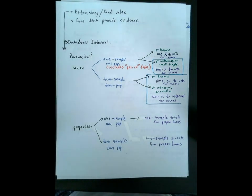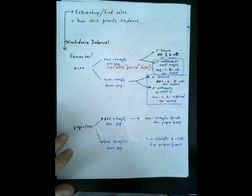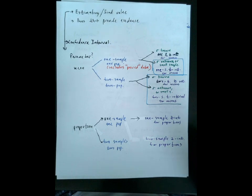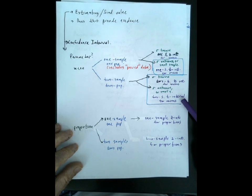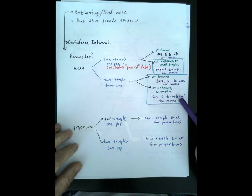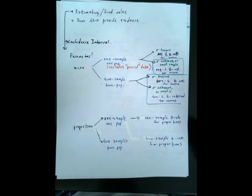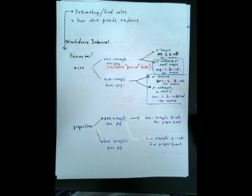For a confidence interval for a one-sample mean, since we won't know the population standard deviation sigma, you're going to calculate a one-sample t-interval for means. If you're comparing the means of two independent populations with sigma unknown, you're going to calculate a two-sample t-interval for means. We use t because we use the standard error estimated from the sample standard deviation, rather than z which requires knowing the population standard deviation.